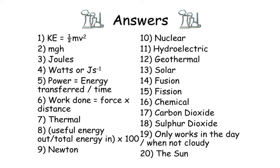Number four: watts or joules per second. Number five: power equals energy transferred divided by time. Number six: work done equals force times distance.